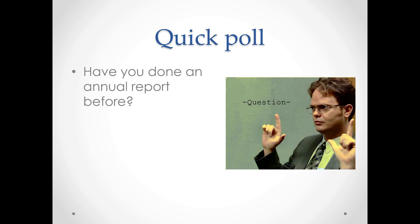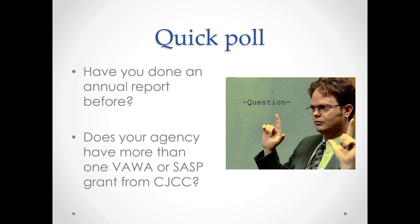It seems like most of you are old hands — you're pros at this. Does your agency have more than one VAWA or SAS grant from CJCC? In other words, does your agency have a VAWA and a SAS grant, or more than one VAWA grant?